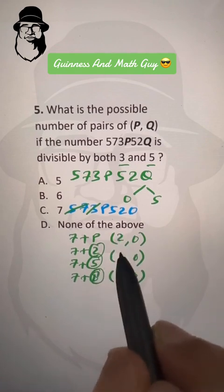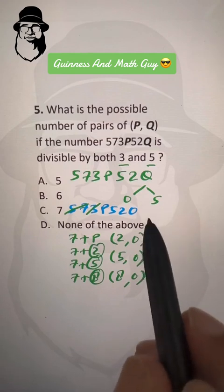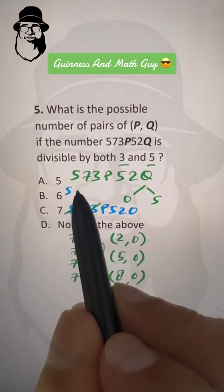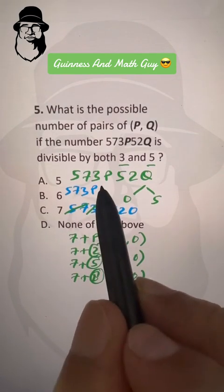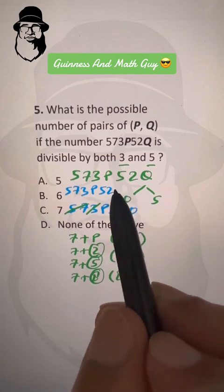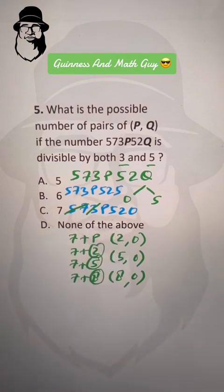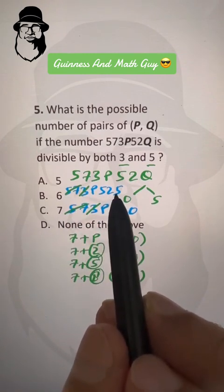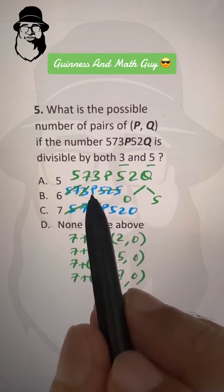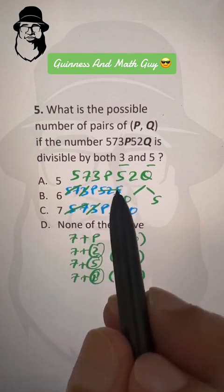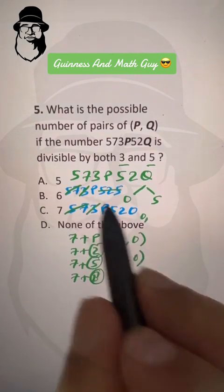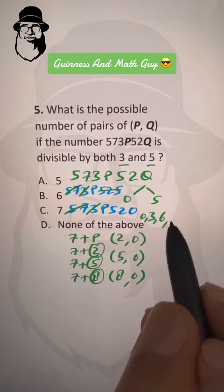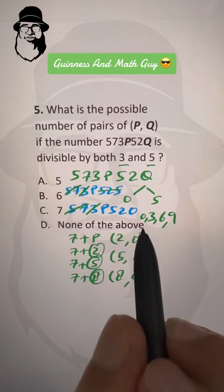There are three options when q is 0. If q is 5, the number becomes 5 7 3 p 5 2 5. As before, 5 plus 7 is 12 — cross them. 3 is in the 3 times table — cross it. 5 plus 2 is 7, and 7 plus 5 is 12, which is in the 3 times table — cross it. Now p must make the remaining sum divisible by 3, so p can be 0, 3, 6, or 9.